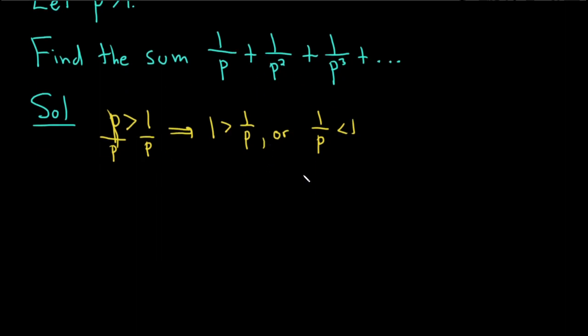So now we can find the sum. Because r here is equal to 1 over p and recall that if the absolute value of r is less than 1 then the geometric series converges. So the absolute value of r is just 1 over p because p is positive and that's certainly less than 1. So this certainly converges.